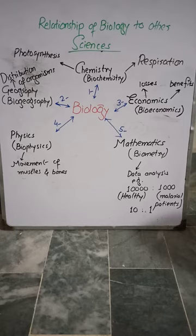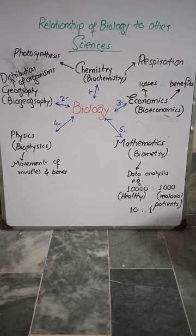Second is geography. Geography is basically the distribution of anything on the earth. But here we are concerned with living organisms. So, the distribution of living organisms on different parts of the earth is called biogeography.